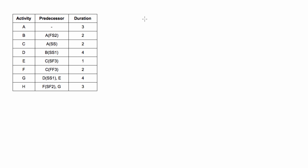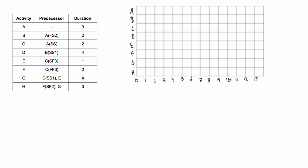First, let's set up our Gantt chart. Our first activity in the project will be activity A because it has no predecessor. It has a duration of three, so it will go from zero to one, two, three - it goes to the end of day three.